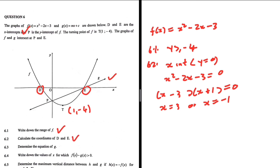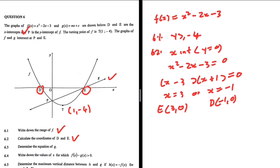The question asks for the coordinates of D and E, so we must state them fully. D is (-1, 0) and E is (3, 0). There we go — we have the coordinates of D and E.